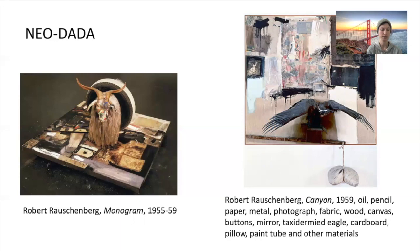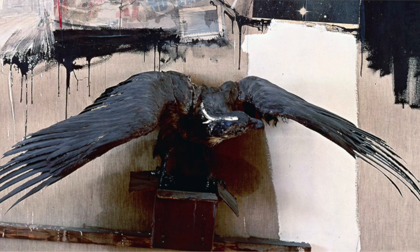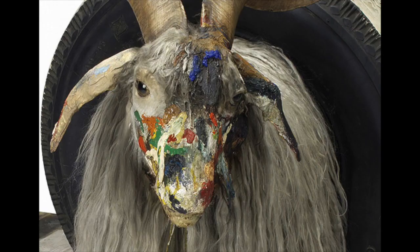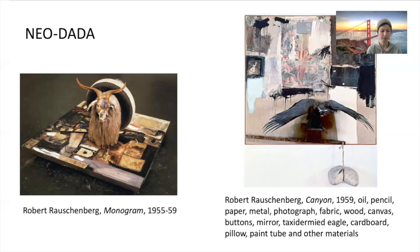They combine some elements of abstract expressionism like the drips and splashes of paint, but unlike the abstract expressionists, these artists don't take themselves so seriously. Canyon and Monogram by Rauschenberg, shown here on the screen, are both examples of combines. They combine bits of high art materials like oil paint, pencil, and photography, with low art found objects like buttons, bits of mirror, cardboard, a pillow, and even taxidermied animals. Like Duchamp, Rauschenberg takes found objects, makes a few adjustments, and presents them in an art context — so in a way these are also kind of like ready-made or assisted ready-made objects.